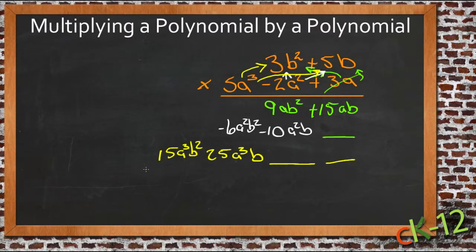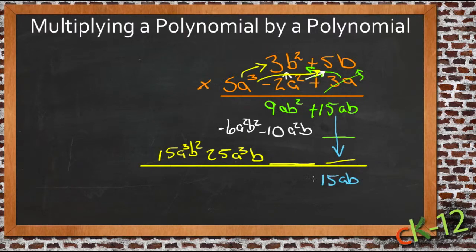So now we just add everything straight down, draw our line here. Let's do one more color. We have 15ab, it just goes straight down. And then that's a positive.